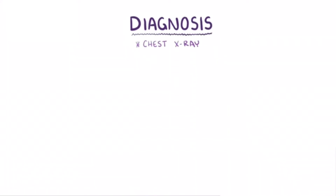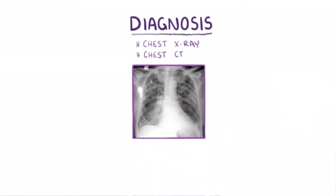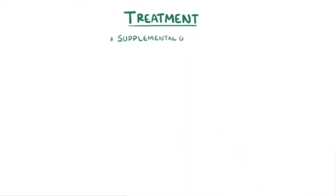The diagnosis of pulmonary edema is usually made with a chest x-ray or chest CT scan that shows fluid in the interstitial space. Treatment for pulmonary edema typically involves giving supplemental oxygen. Other treatments are dependent on the underlying cause.